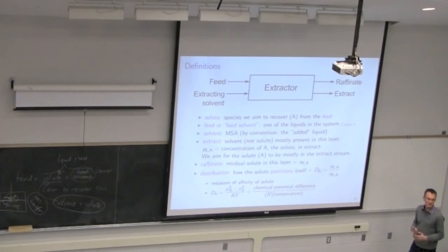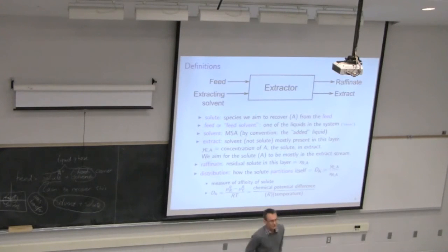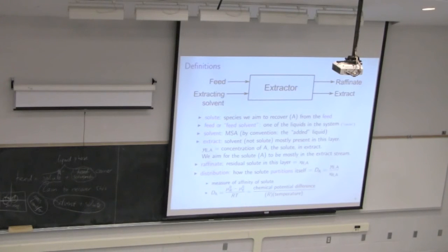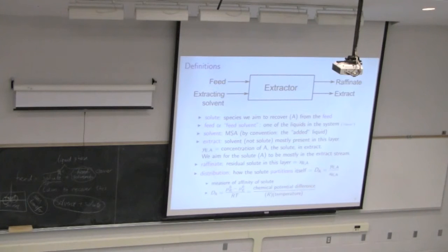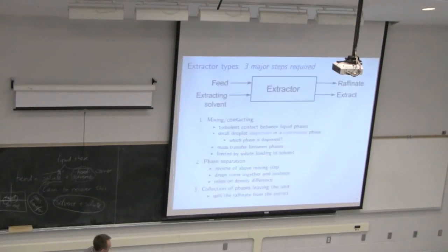Fortunately, equilibrium is reached fairly quickly in most situations. How do you know when you've reached equilibrium with a new system? Experimentally — you mix for different amounts of time and measure the stream compositions at the end. Sophisticated companies use in-line spectrometers to get the answer quickly. So we can measure those distributions fairly easily.